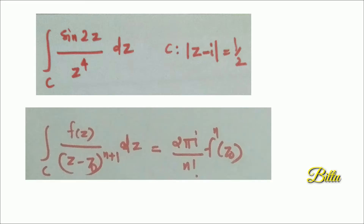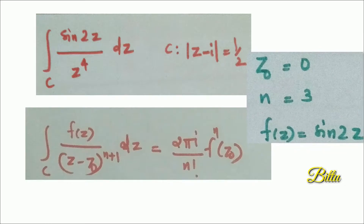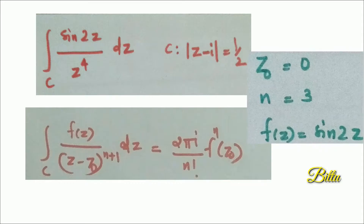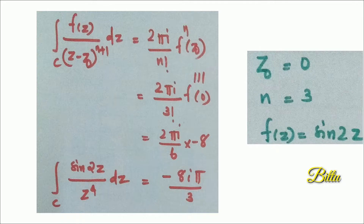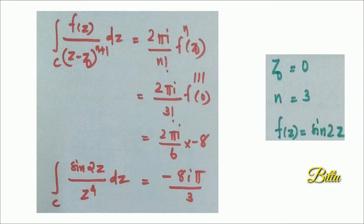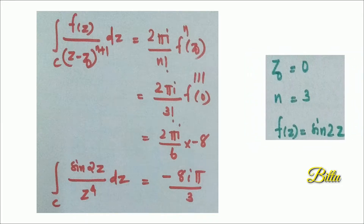For applying this result, we choose Z₀ = 0, N = 3, and f(z) = sin(2z). Cauchy's Integral Formula for derivatives gives the integral over C of f(z) by (z minus z₀)^(n+1) dz equal to 2πi divided by n factorial times f^(n)(z₀). Replacing Z₀ and N, the right side becomes 2πi divided by 3 factorial times f‴(0).